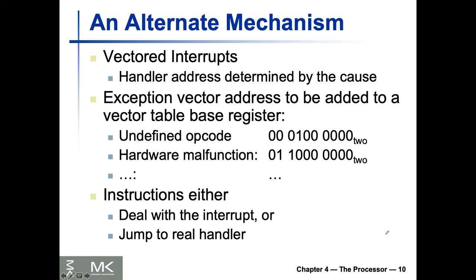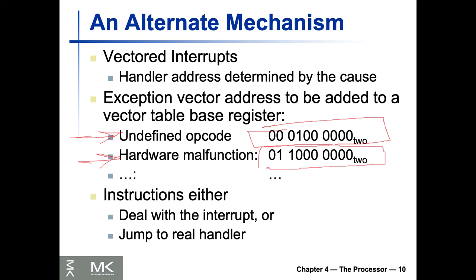For the reason of exception we can define, for instance, two reasons: undefined opcode with one value and hardware malfunction with another value. You could define many more since you have 64 bits, but for now just these two. Then we need to decide whether to deal with the interrupt or jump to a real handler.